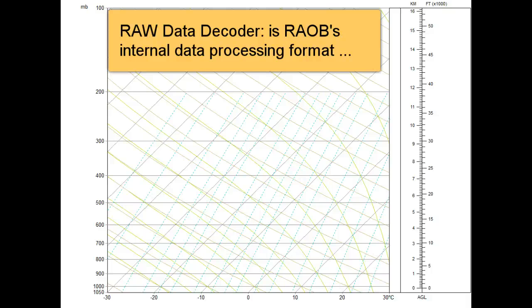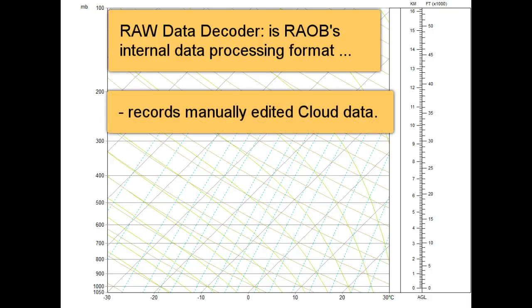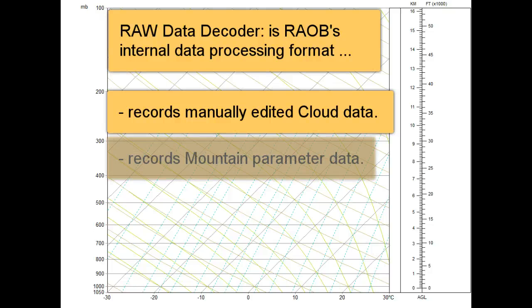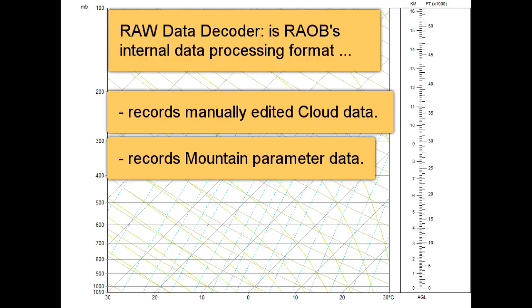The raw format has two unique abilities, which are very useful for research and forensic purposes. First, it permits recording of manually edited cloud data. Second, it permits recording of mountain data parameters.